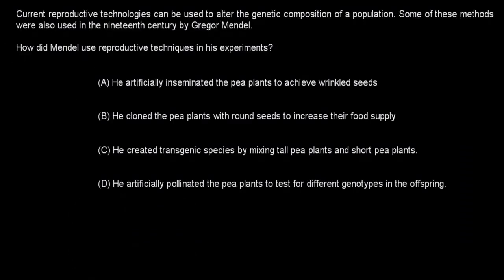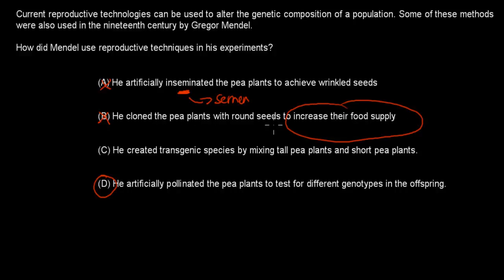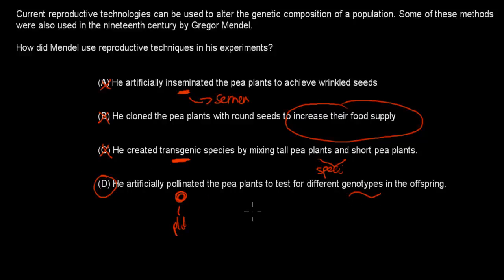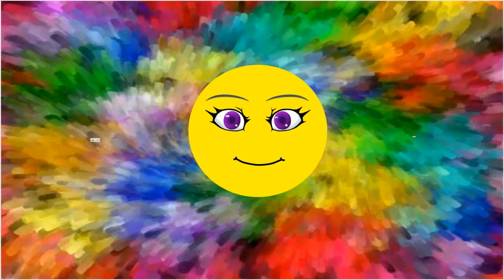Welcome back. The correct answer is D. A is incorrect because insemination refers to semen, and plants don't have semen — they have pollen. B is incorrect because Mendel did not clone plants to increase food supply. C is incorrect because he created a hybrid, but both plants were still pea plants — the same species — so we don't call it a transgenic species. D is correct because Mendel used pollination, which applies to plants, and he did test for different genotypes in the offspring. Hopefully that was useful — thank you for watching.